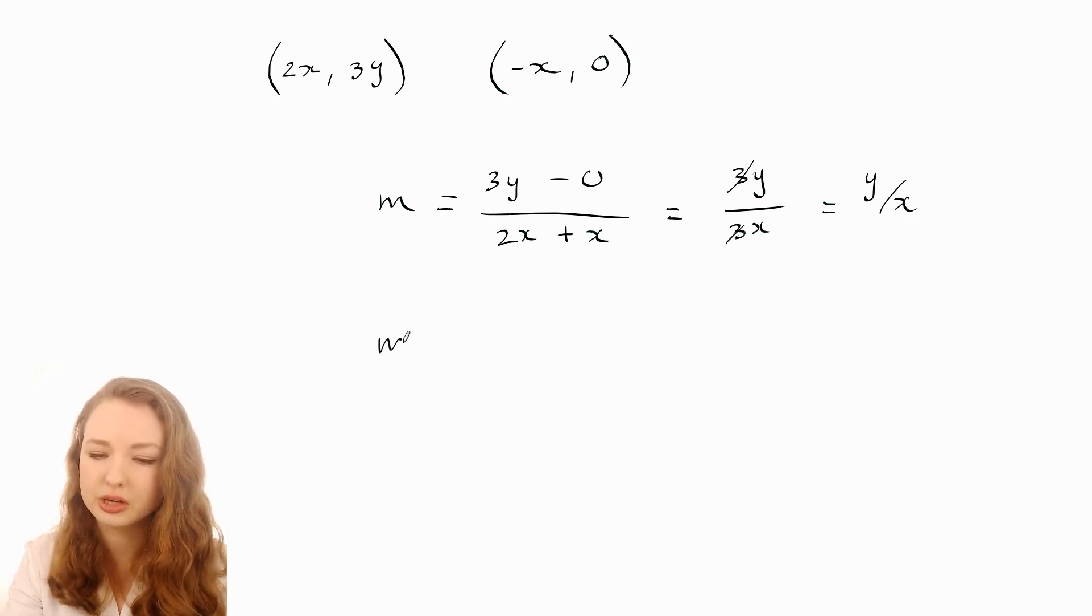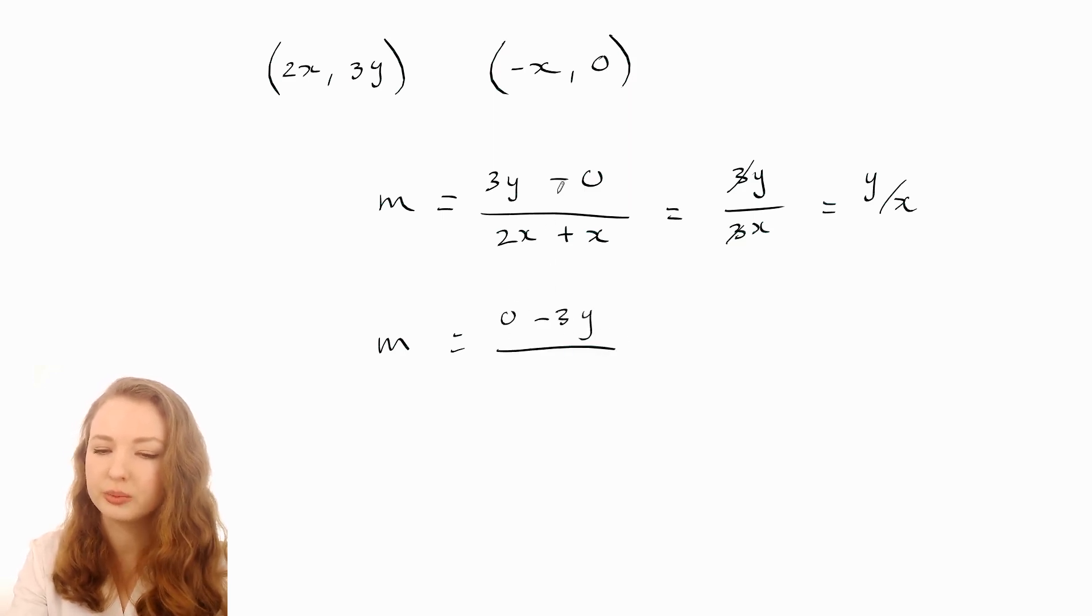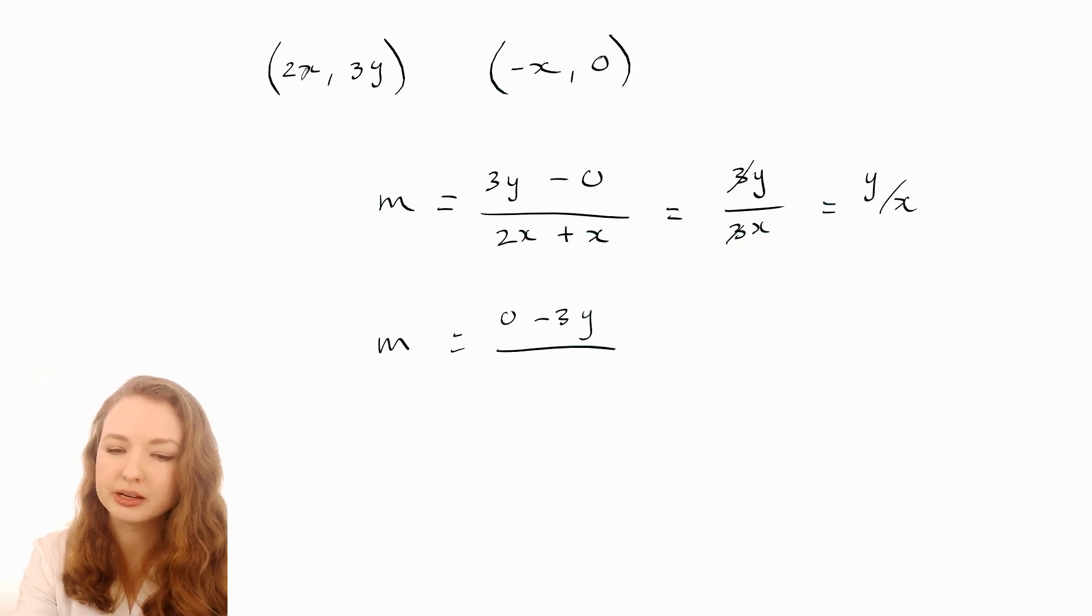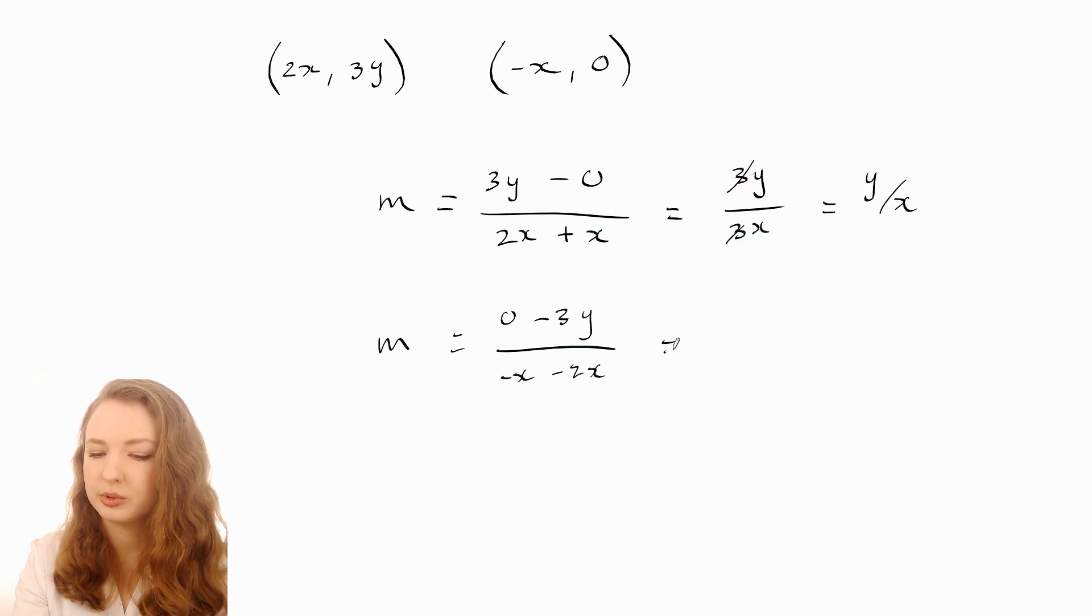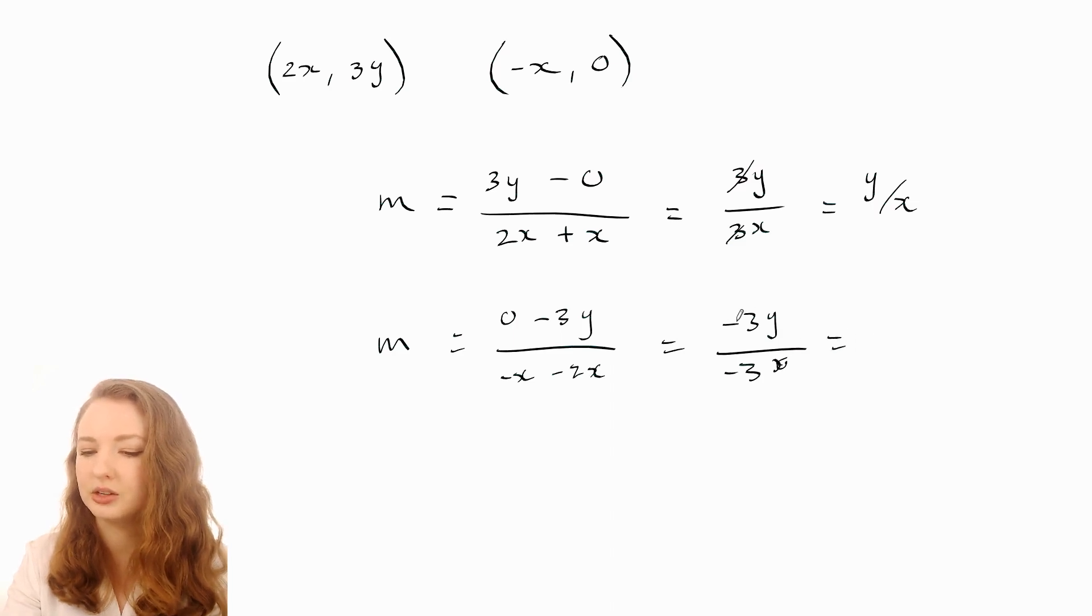You could also do it the other way around. You can do that one minus that one, and then on the bottom it would be negative x minus 2x. That would give you negative 3y over negative 3x, and then you can cancel the negative threes. So that makes y over x. Either one of those ways is fine.